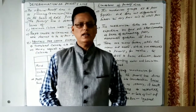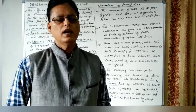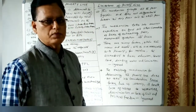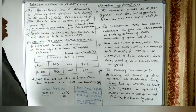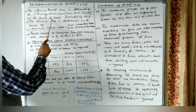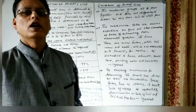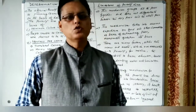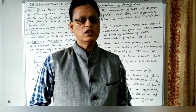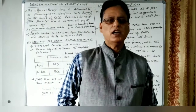Welcome back to class. Today we'll discuss the determination of the poverty line and its limitations. The official poverty line is determined by the Planning Commission, now NITI Aayog, on the basis of data provided by the National Sample Survey Office, which collects data related to poverty in our country.